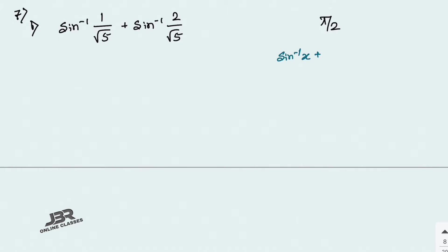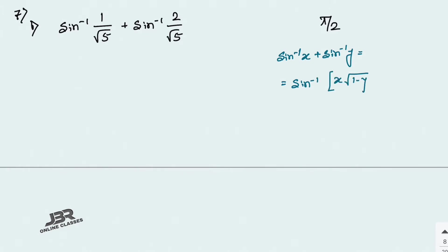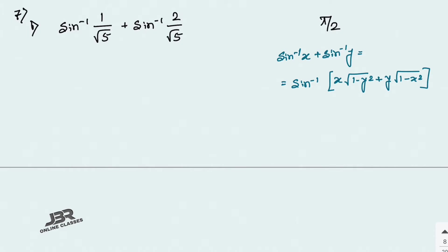The formula is sin⁻¹(x) + sin⁻¹(y) = sin⁻¹(x·√(1−y²) + y·√(1−x²)). That is the formula for sin⁻¹(x) + sin⁻¹(y). By applying this formula, we write sin⁻¹ of: x = 1/√5, then under root (1 − y²), where y = 2/√5, so y² = 4/5.